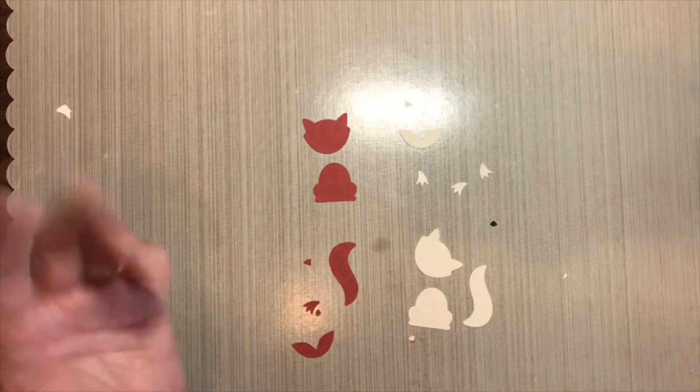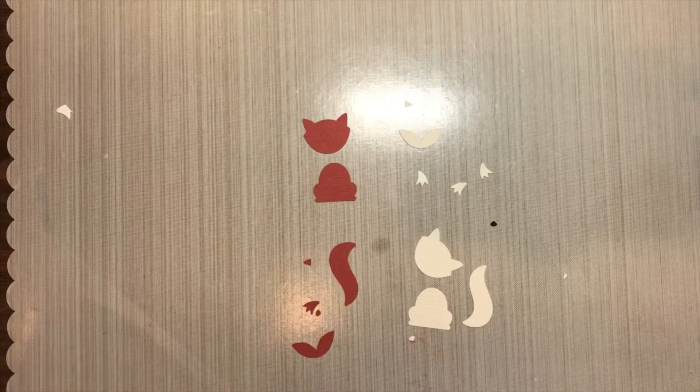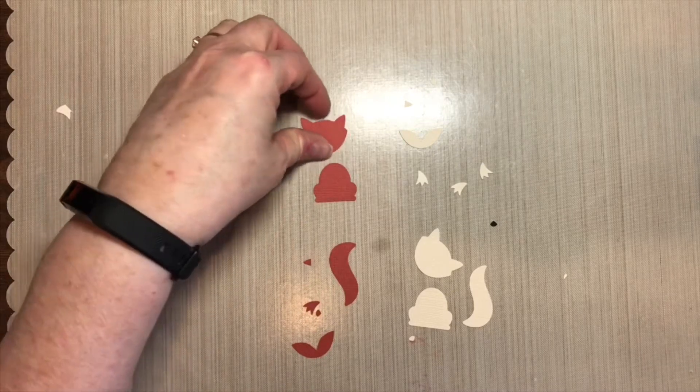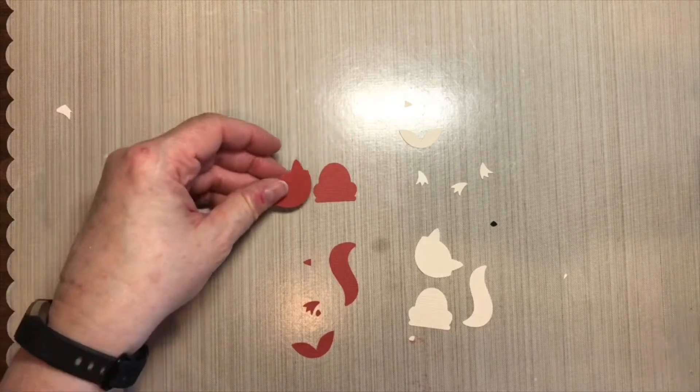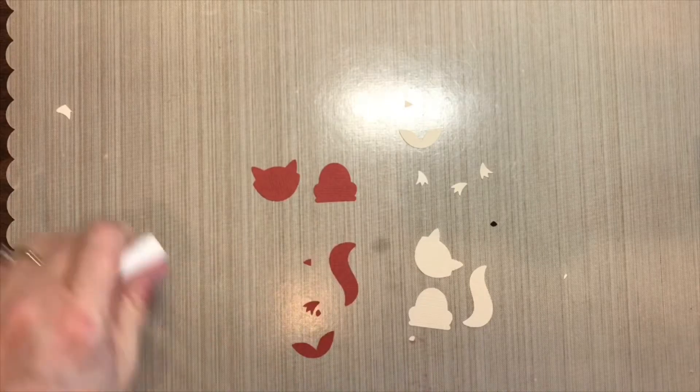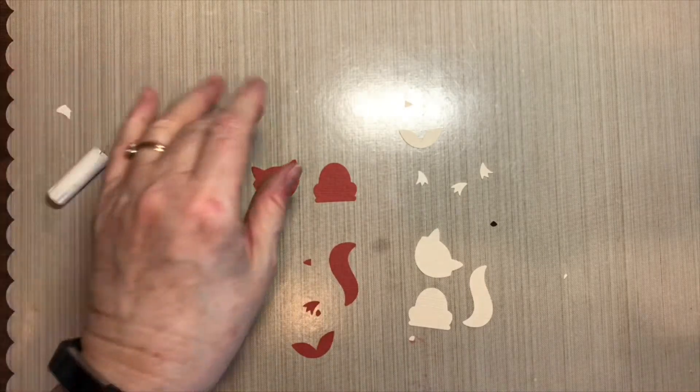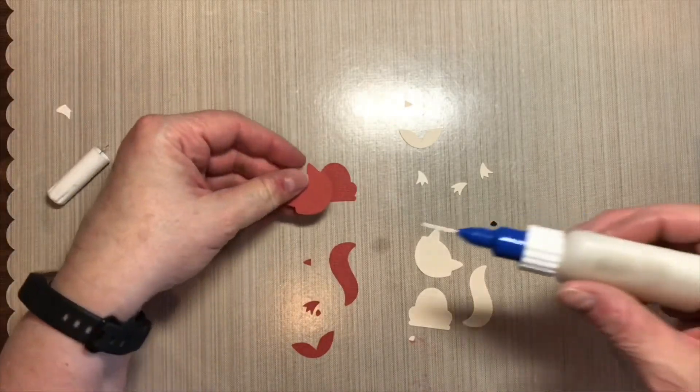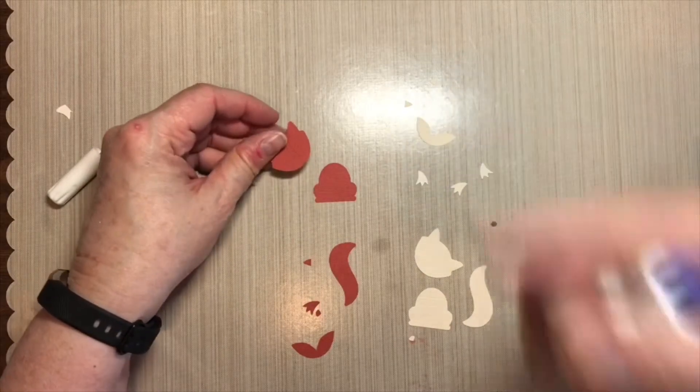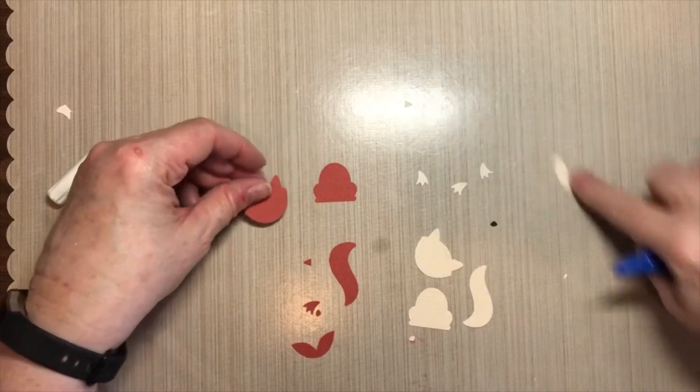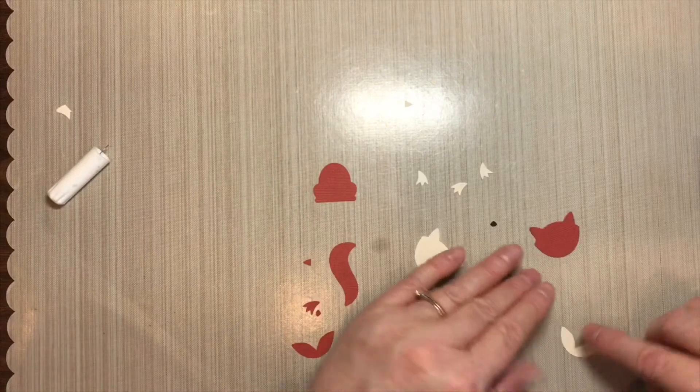So let's go ahead and start building him separately. You want to build the body and the head and the tail. So for the head I need these two pieces.